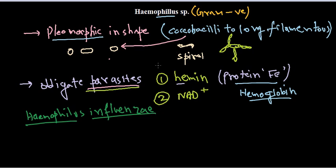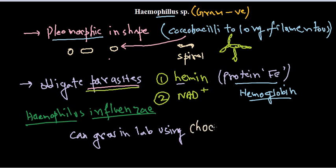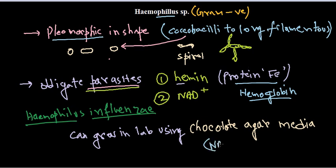They require special media to grow in the lab. We must grow them in chocolate agar media, and this media must contain NAD+ and hemin for their proper growth.